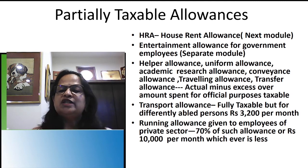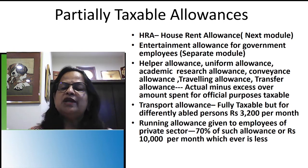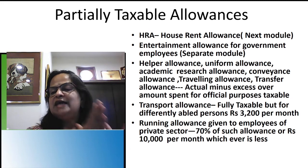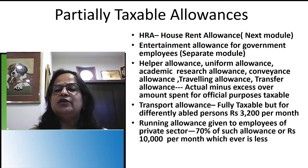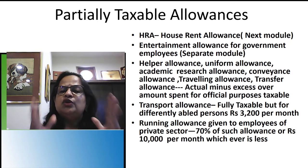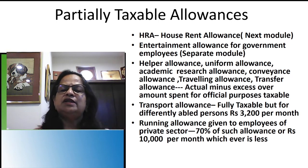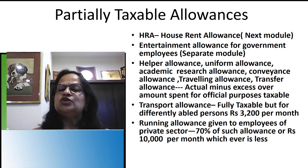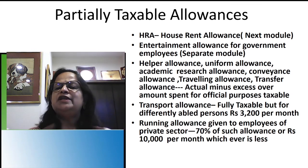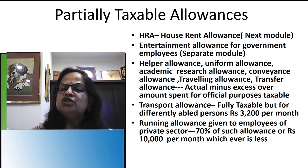Transport allowance is fully taxable. However, for differently abled persons, Rs. 3,200 per month is exempted. This change was made in assessment year 2019-20. Earlier, ordinary employees also used to get exemption, but now transport allowance is fully taxable for everyone except differently abled persons who get an exemption of Rs. 3,200 per month. You can expect this as a two-mark question.